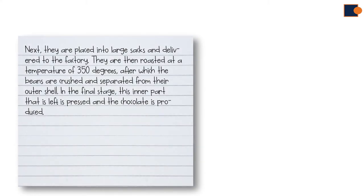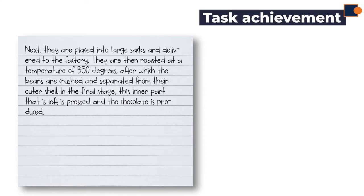Now, let's have a look at the next paragraph. In terms of task achievement, it covers all main features, such as putting in a large bag, transportation, roasting, crushing, separation, and finally, pressing to make chocolate.